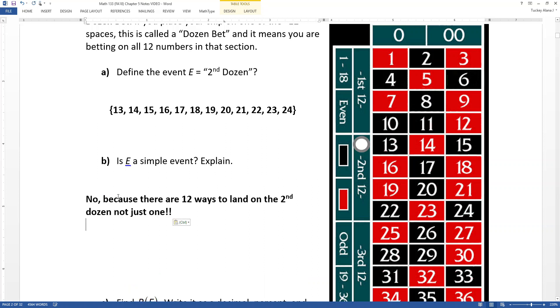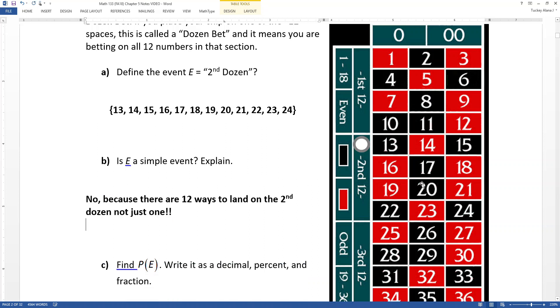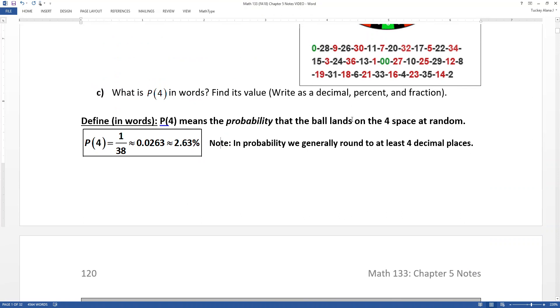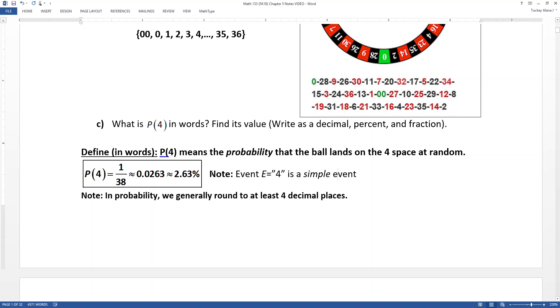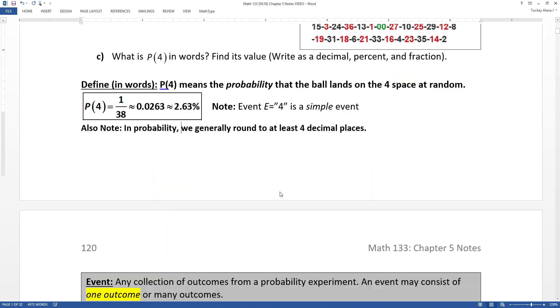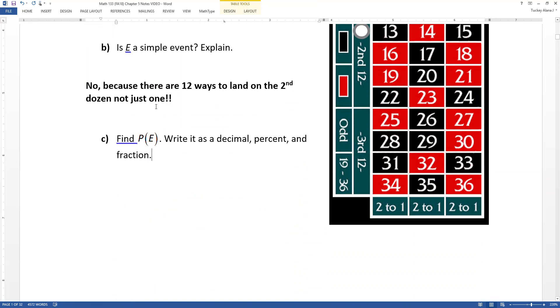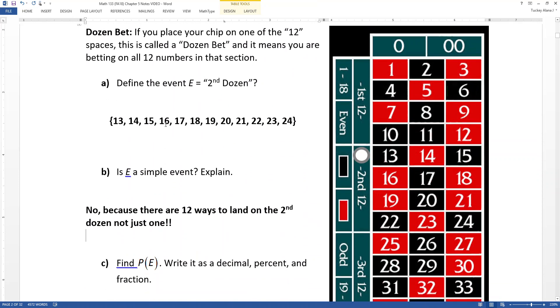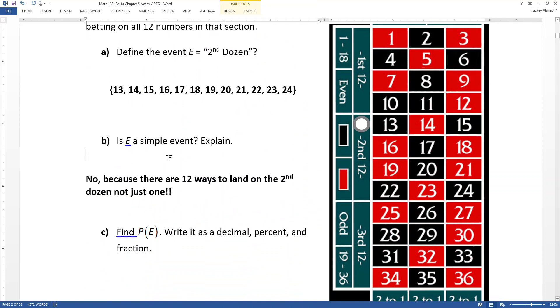Is E a simple event? Well, no, no, no, right? E is not a simple event. There are 12 ways that you could land on that second dozen. Just a side note for you, 4 is a simple event. I just added a little note right here that 4 is a simple event. So then this event E, right? And you can have lots of different events. Usually if you're going to do multiples, you'll name them E, F, G, and so on. But this event E, which is the second dozen, is not a simple event.